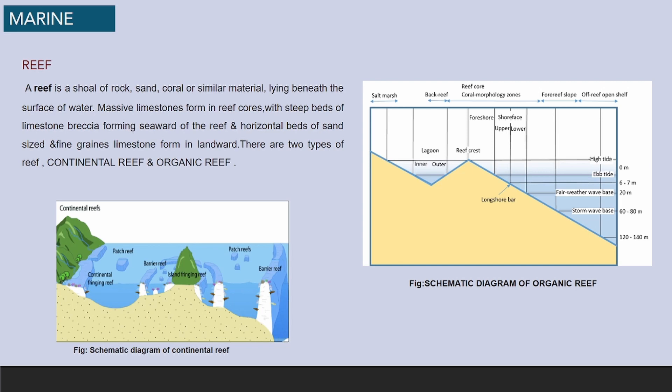Now let's discuss the marine environment. A reef is a shoal of rock, sand, coral, or similar material lying beneath the surface of the water. Massive limestones form in reef cores, with steep beds of limestone breccia forming on the seaward side of the reef and horizontal beds of sand-sized and fine-grained limestone forming landward. There are two types of reefs: continental reefs and organic reefs.